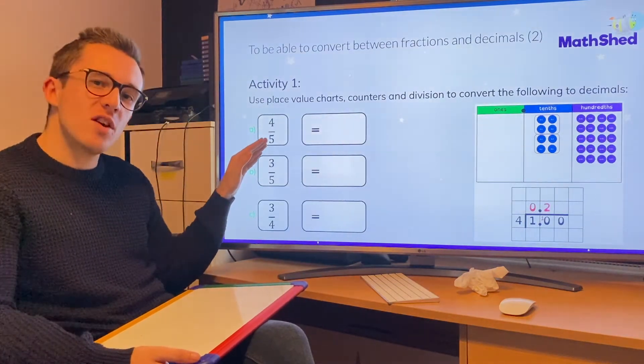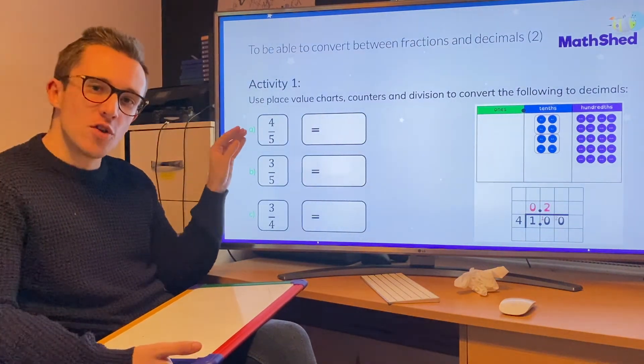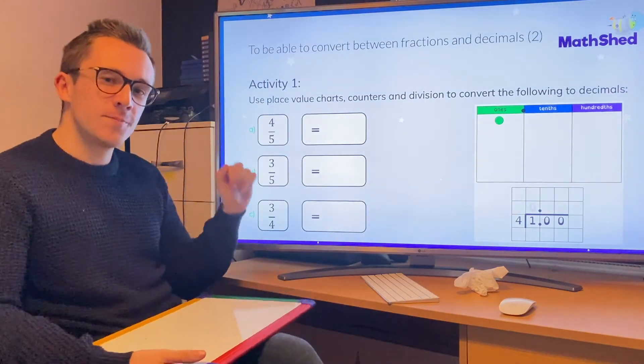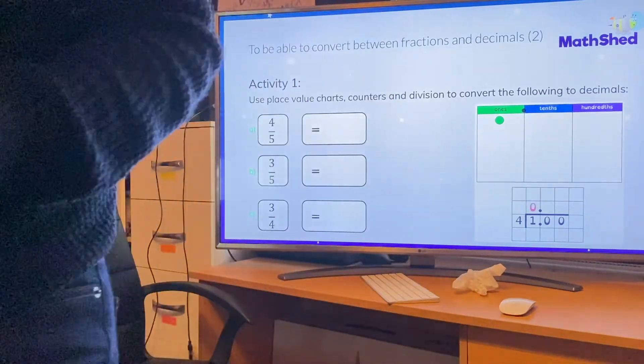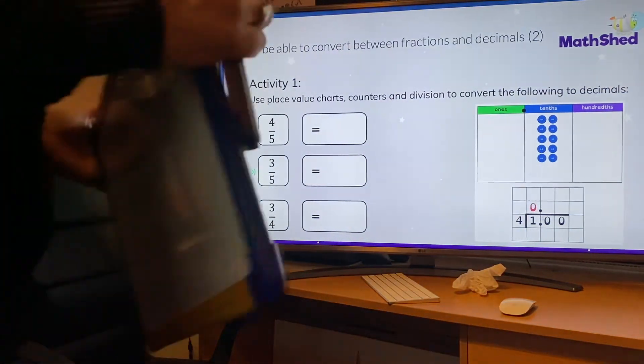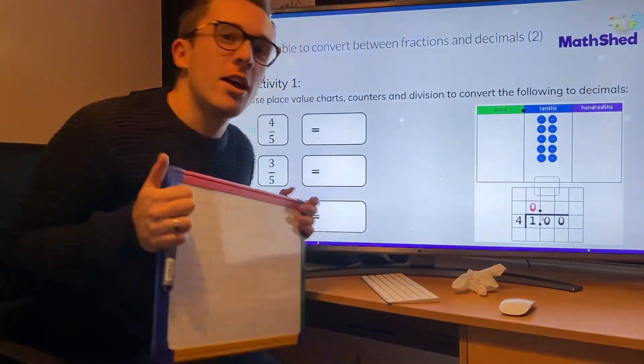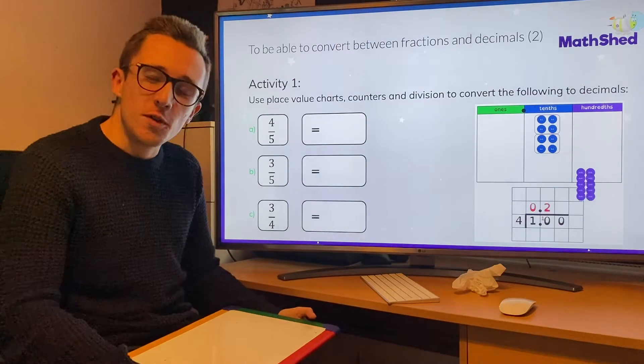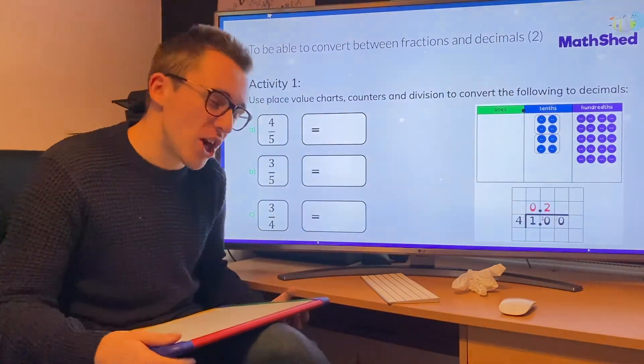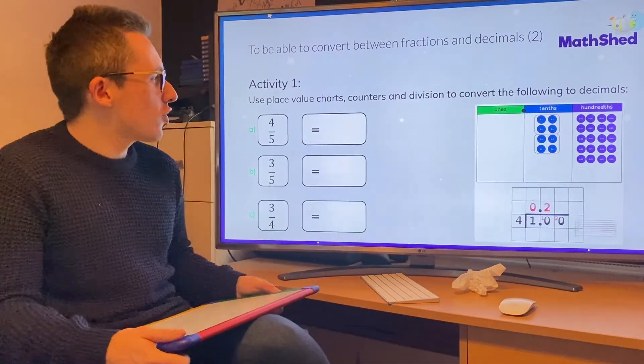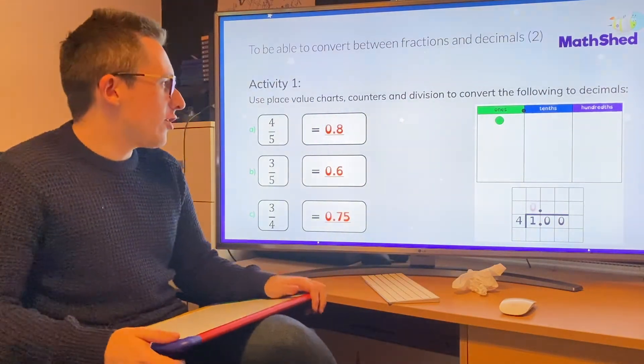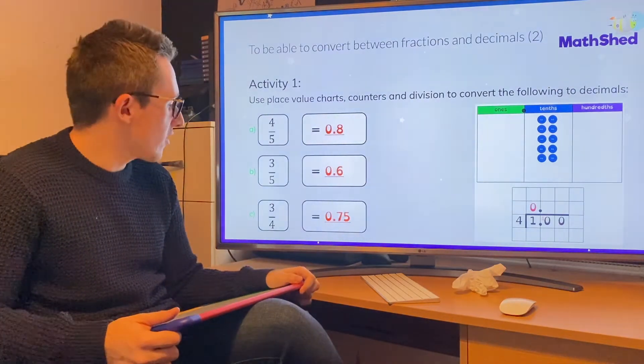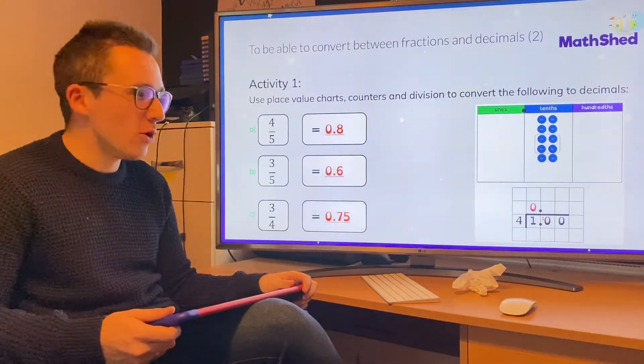Remember, denominator goes on the outside, numerator goes on the inside. Off you go. Sorry about that. This is the second time of me recording this video because the first time it stopped at this point and I didn't realize. So here are your answers here. Four fifths would become 0.8, three fifths would become 0.6, three quarters would become 0.75.